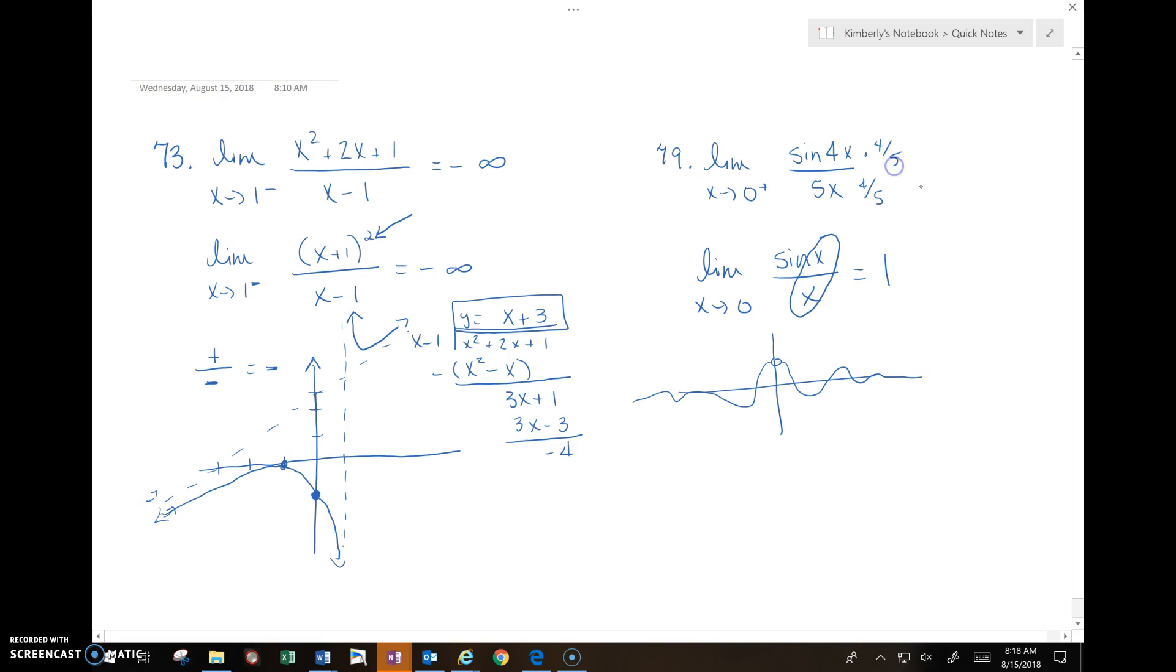So if I multiply the denominator by 4/5 and the numerator by 4/5, I have the limit as x approaches 0 from the right of 4/5 times the sine of 4x divided by 4x. And this limit from either direction is 1. So 4/5 times 1 is 4/5. And this problem wouldn't matter if it was approaching from the right or from the left or if it's just x approaches 0. We know that on the graph as x approaches 0, there is a hole at y equals 4/5.